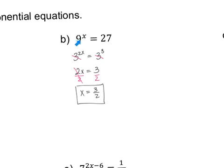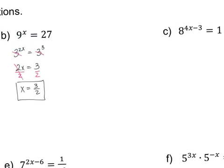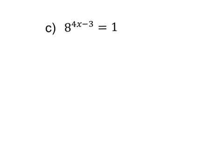That one required changing both bases to find a common base that works for both. So just be flexible with numbers. This one's really tricky — you have an 8 and this side's a 1. And 1 to any power is not going to give you 8. So this is a trick to remember: anything to the 0 power is 1.